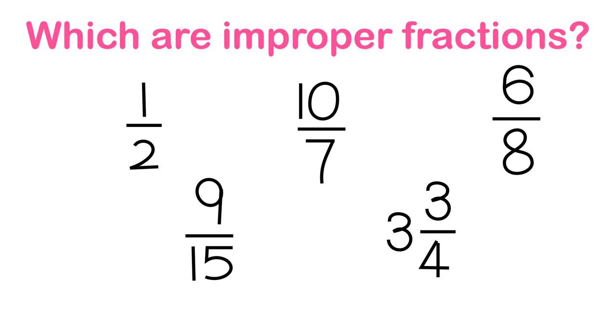Which are improper fractions? 10 over 7 is an improper fraction because 10 is larger than 7.